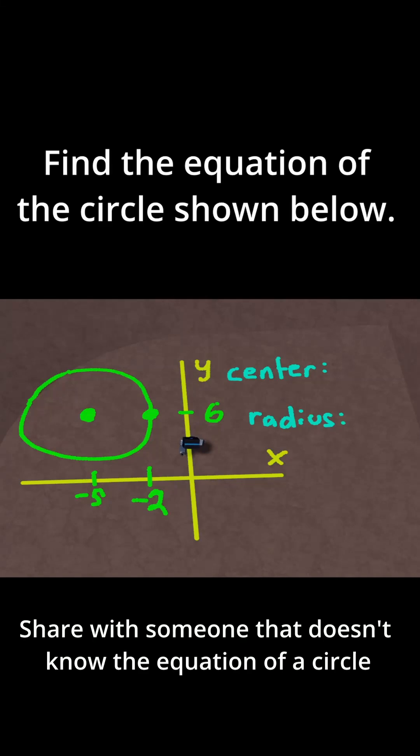This problem says find the equation of the circle shown below. So here I've drawn a circle with a couple points. I've drawn the center and I've drawn one point on the circle, and based on that let's find the equation of the circle.